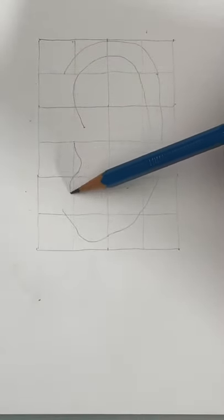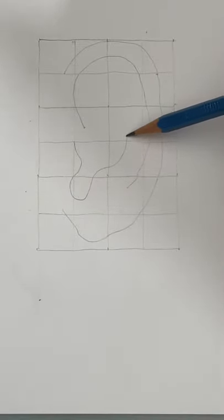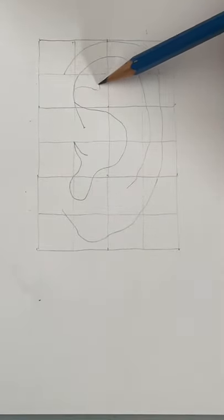This winding line is the tragus, the inter-tragal notch, and then up into the scapha. This line is the triangular fossa.